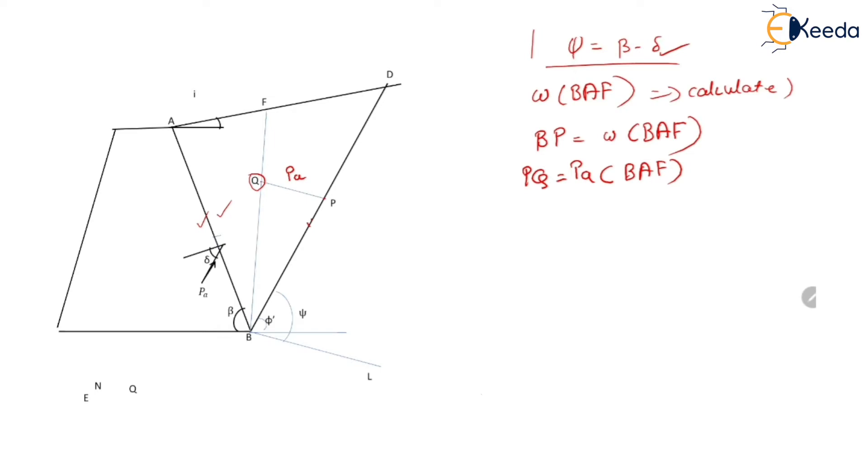Now let us assume another trial surface, say F dash, BF dash. So weight of this wedge BAF dash is again plotted on line BD. Suppose point P dash represents the weight of BF dash such that BP dash is equal to weight of the wedge BAF dash. Then again from this point P dash a parallel line is drawn. This parallel line intersect the failure surface BF dash at point Q dash.